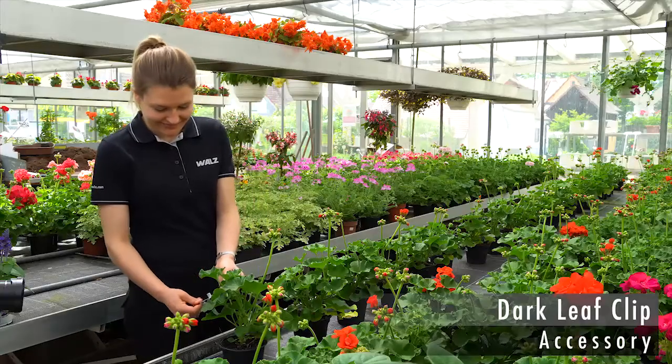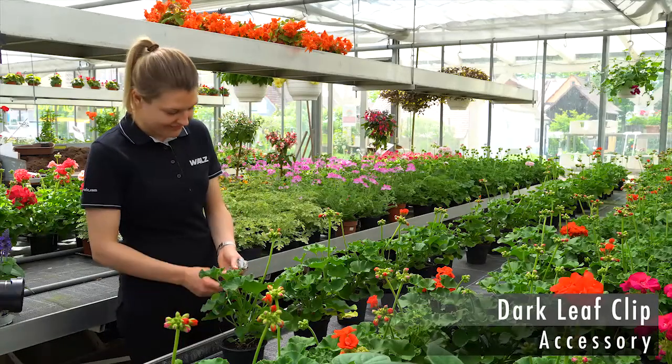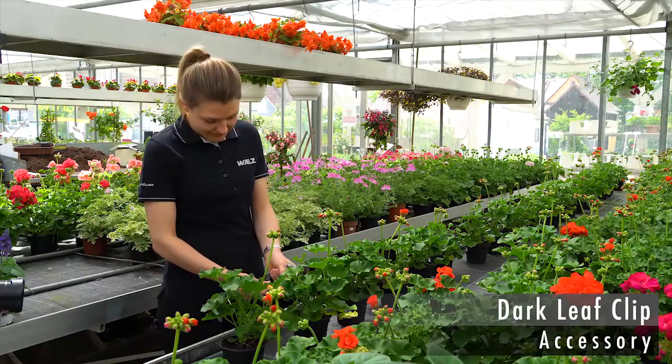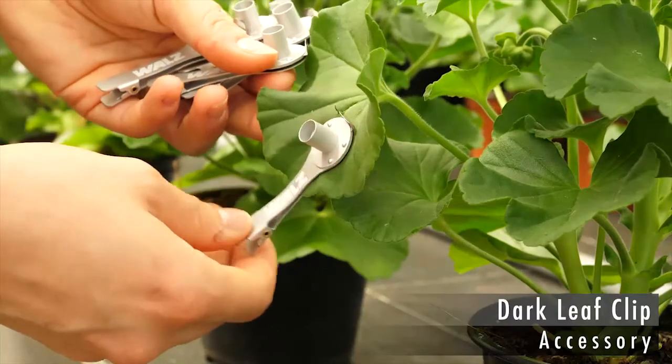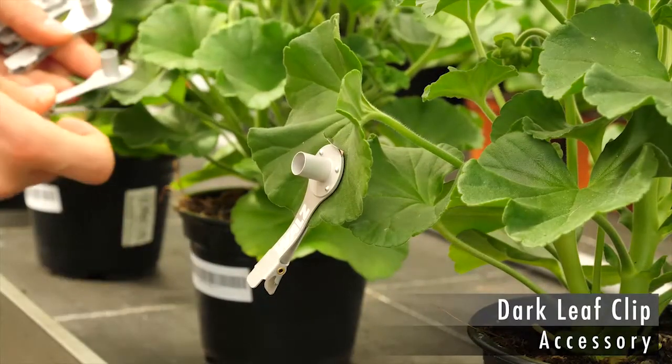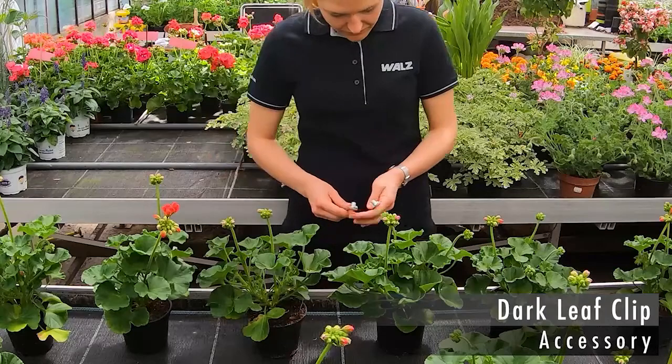To prepare the measurements, Sabrina positions one dark leaf clip on each plant. Preparing a number of plants in advance greatly increases the sample throughput within the measuring stage.